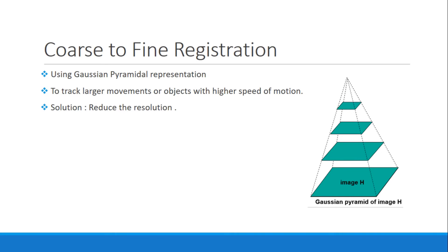Now I'll talk about the coarse-to-fine registration. The Lucas-Kanade algorithm is designed to track very small changes or motions across frames. In cases where the speed or displacement of motion is too high, we can use an iterative approach where the image is represented as Gaussian pyramids of different levels. The idea is to reduce the resolution of the image using pyramidal representation, which helps track larger movements.